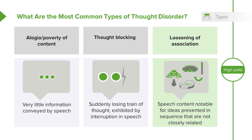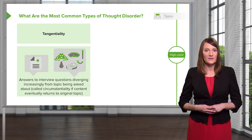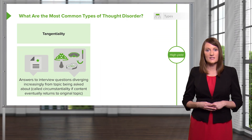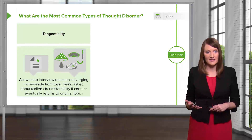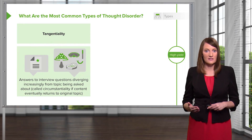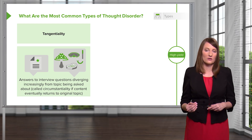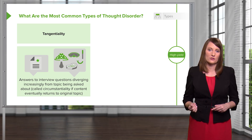Loosening of associations describes speech content notable for ideas presented in sequence that are not closely related — where somebody jumps all over the place. Tangential thought process is where answers to interview questions diverge increasingly from topic to topic. Some call this circumstantiality if the content eventually returns to the original topic, but when somebody is truly tangential, they go off course and can never return to the point.